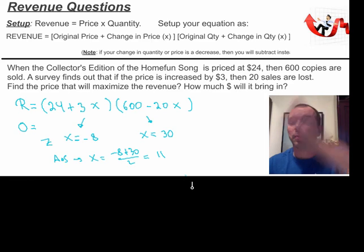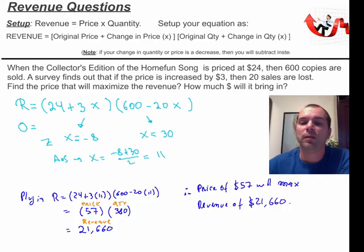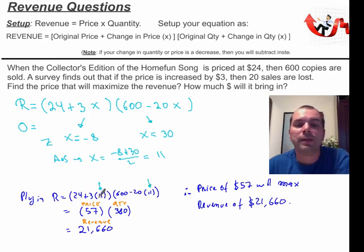And what do I need left to do? Plug it in. And I believe that I have this done already from before. So when I plug it in, 24 plus 3 times 11, that's my X, right? Goes in there. And my X, I just plugged it in. And it figures out that it's going to be 57. And 600 minus 20 times 11 gives me 380. Therefore, the revenue is 21,660.